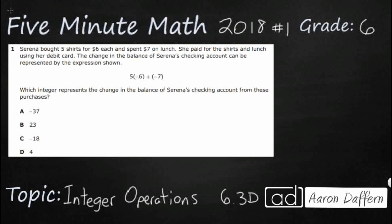So, Serena is buying 5 shirts for $6 each, and then she spends $7 for lunch. She pays these things with her debit card, and then we have an expression here, 5 parentheses negative 6 plus negative 7. So how do we simplify that into one of these integers down here?